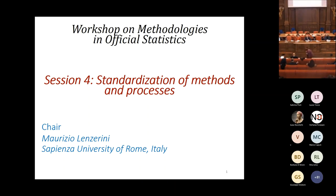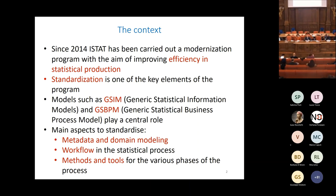I will be very brief in the introduction. The context of this session is that ISTAT, as we know, has been carrying out a modernization program with the aim of improving efficiency in statistical production. Standardization is one of the key elements for this purpose. Models such as the Generic Statistical Information Model and Generic Statistical Business Process Model play a central role in this standardization.